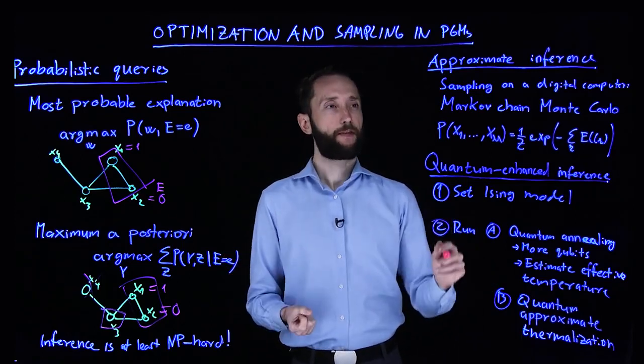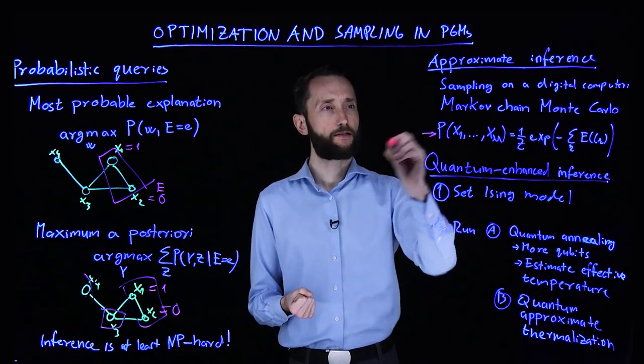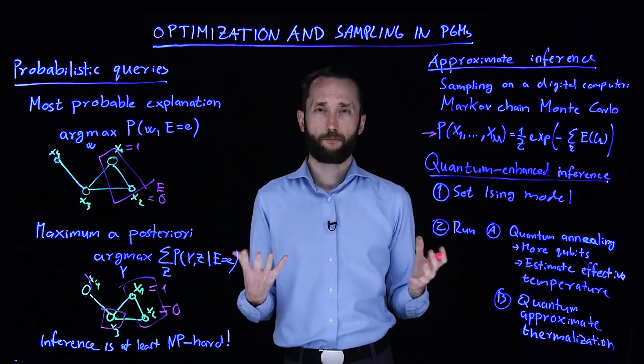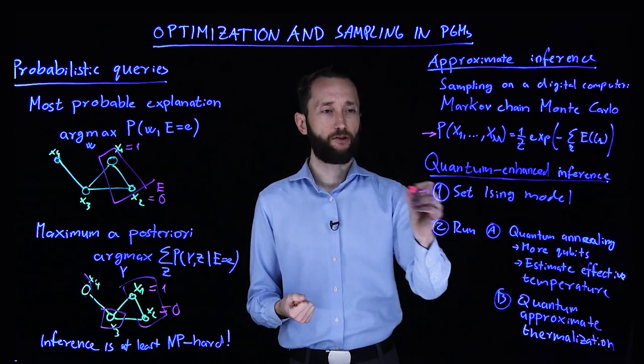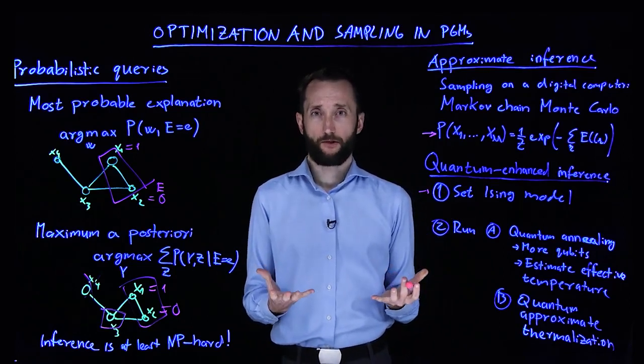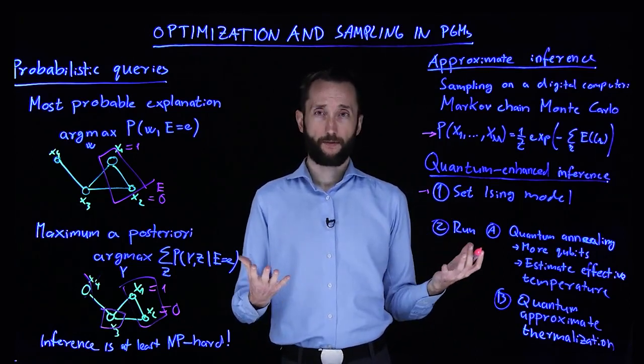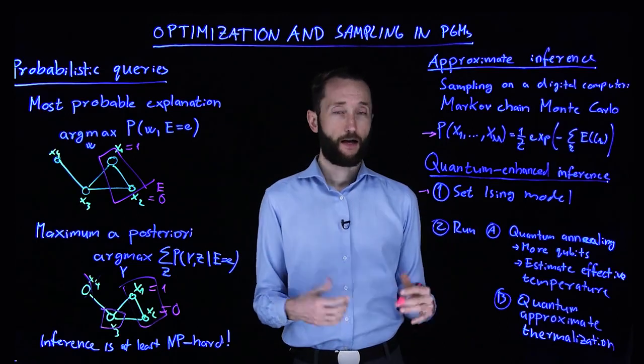But then remember that our probability distribution is just this. It factorizes the Boltzmann distribution. So if we can set an Ising model, then we can just use a quantum computer to do approximate inference for us.